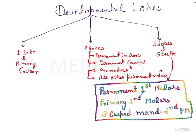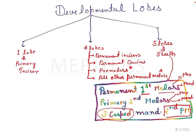The five teeth arising from five lobes are: permanent first molars, whether maxillary or mandibular, arise from five lobes; primary second molars, whether maxillary or mandibular, also arise from five lobes; and the three-cusp type mandibular second premolars also arise from five lobes.